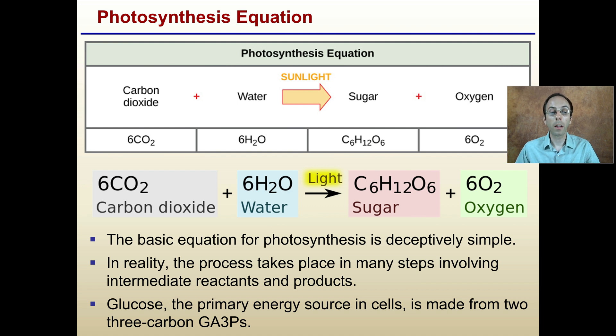This requires a lot of intermediate reactants, but this is the general summary. Glucose is the primary energy source in cells, and is made from two three-carbon GA3Ps.